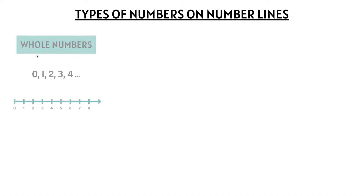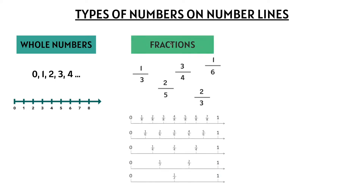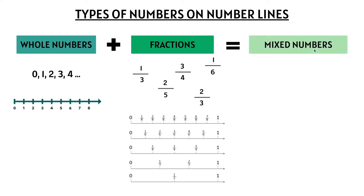Types of numbers on number lines. We have learned about whole numbers like 0, 1, 2, 3, 4, and you could keep going on forever. We have learned about fractions like 1/3, 2/5, 3/4, 1/6, and 2/3, and many other fractions. Now if we put whole numbers and fractions together, we get mixed numbers.